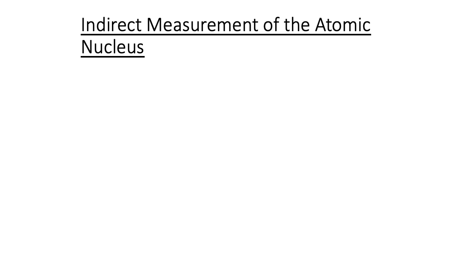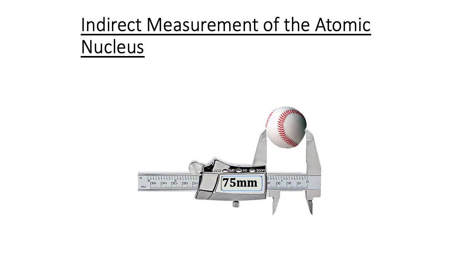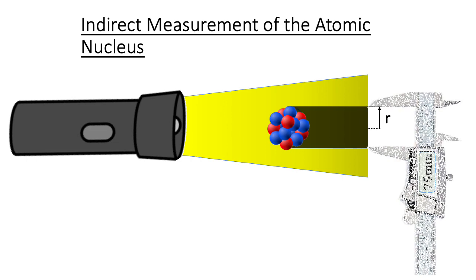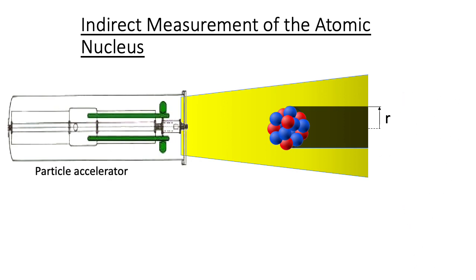The size of a macroscopic object such as a baseball can be measured directly — we could also use a flashlight and measure the shadow, then divide by 2 to get the radius. This principle is useful in measuring the size of objects too small for direct measurement, such as the atomic nucleus. Instead of a flashlight, we use a particle accelerator and a beam of electrons. The nuclear radius is then determined from the electron shadow, more commonly known as the electron scattering pattern.